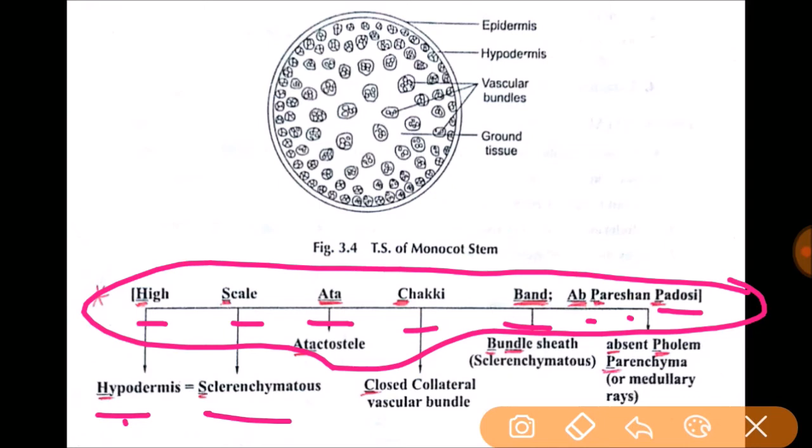Hypodermis equals sclerenchymatous cells. Atta - C is for closed collateral vascular bundle. Closed collateral vascular bundle means in these kinds cambium is absent. Bandh means bundle sheath, which is sclerenchymatous.